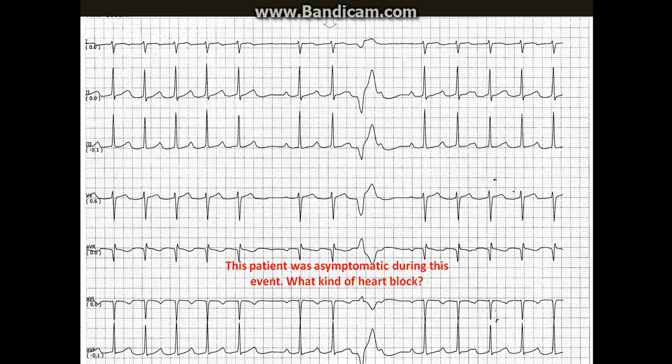This patient was asymptomatic during this event. What kind of heart block is this? First and foremost, always remember that an arrhythmia can almost always be explained by a single phenomenon. Let us try to dissect this case.